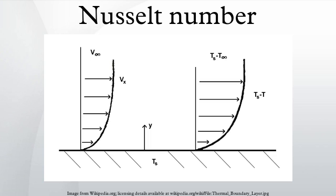Some examples of characteristic length are the outer diameter of a cylinder in cross flow, the length of a vertical plate undergoing natural convection, or the diameter of a sphere.